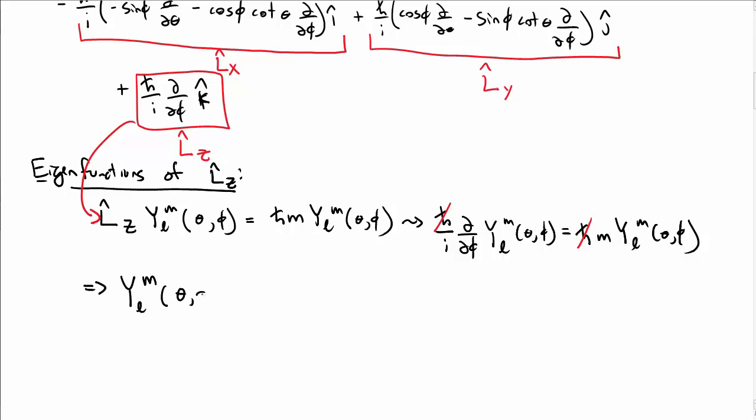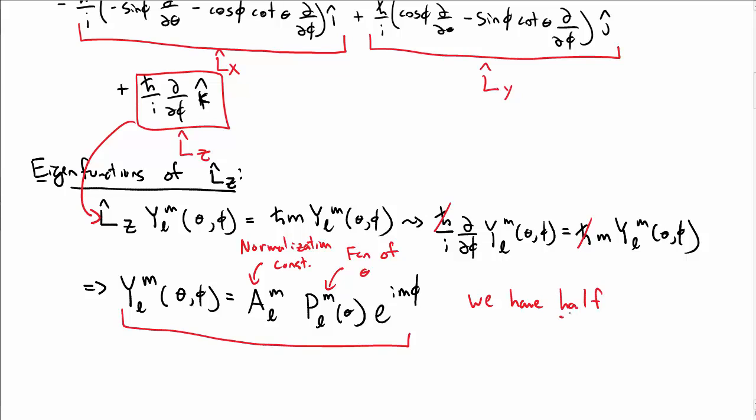That tells us that the function Y_lm is, well, maybe some constants out front I'm writing here, some theta dependence, which I can't determine here, but I can determine the phi dependence. The phi dependence should be e to the i m phi. So again, the first term is some normalization constant, which I'm just going to pull out here. There is a function of theta here, which we don't know anything about, but we do know the phi dependence now. It's e to the i m phi.